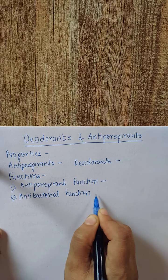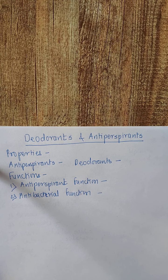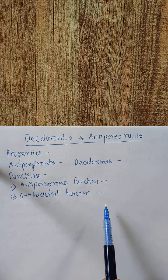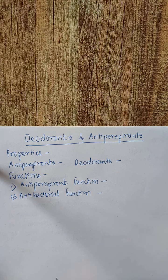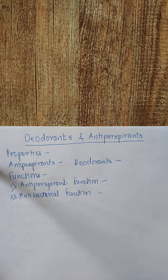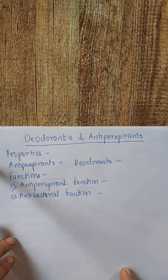The second function is the antibacterial function: to suppress the proliferation of skin bacteria. Bacteria present on the skin multiply and their activity produces body odor. Antibacterial agents used for bacteria on the skin responsible for body odor include triclosan, benzalkonium chloride, chlorhexidine hydrochloride, chlorhexidine gluconate, and hydrocarbon. Such substances are used to fulfill the antibacterial function.